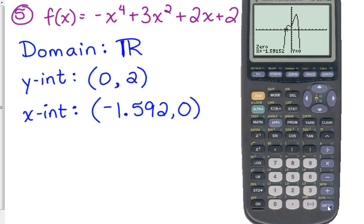Okay, so one of our x-intercepts is (-1.592, 0). Remember, I always want you to round to three numbers after the decimal. So 5, 9, that 5 rounds up at 1.